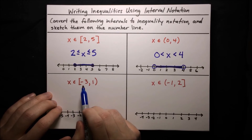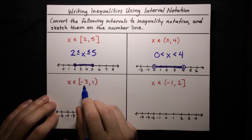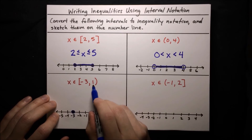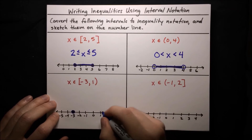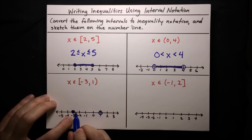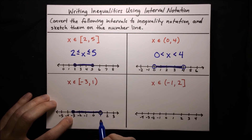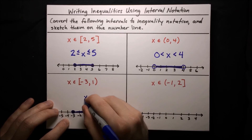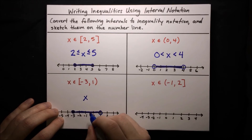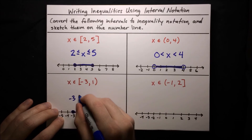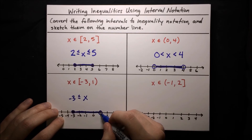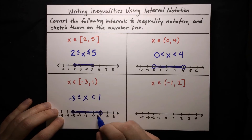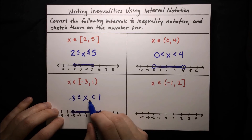For the mixed interval [-3, 1): the left endpoint is -3 with a bracket, meaning closed circle. The right endpoint is 1 with a parenthesis, meaning open circle. On the number line, that gives us this interval. The inequality: x is greater than or equal to -3, because equality is allowed at the closed circle, and x is less than 1 — not equal to 1 — because the parenthesis means no equality. So the inequality is -3 ≤ x < 1.